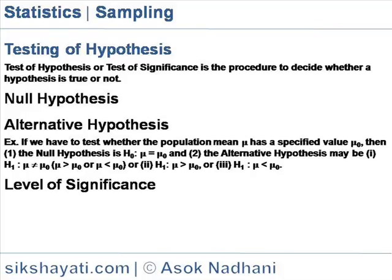Hypothesis testing involves making assumptions about the population parameter, gathering of sample data, and determining the sample statistic. To test the validity of a hypothesis, the difference between the hypothesized value and the actual value of the sample statistic is determined.